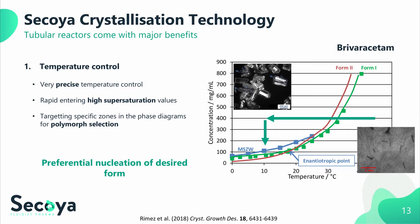Another benefit of the temperature control is specific nucleation of the polymorphic form of choice. This feature is shown for the molecule Brivaracetam. All nucleation above 15 degrees C always results in the formation of needle-like pseudopolymorphs, indicated with the red solubility line, whereas fast quenching to low temperatures enabled control of polymorphism of the desired form 1 crystals. When the control of nucleation is sufficient and fast enough, the solute concentration of the slurry drops below the metastable zone width when exiting the tubing, and nucleation of form 2 is therefore avoided, yielding enantiopure crystalline material as shown in a microscopic image.